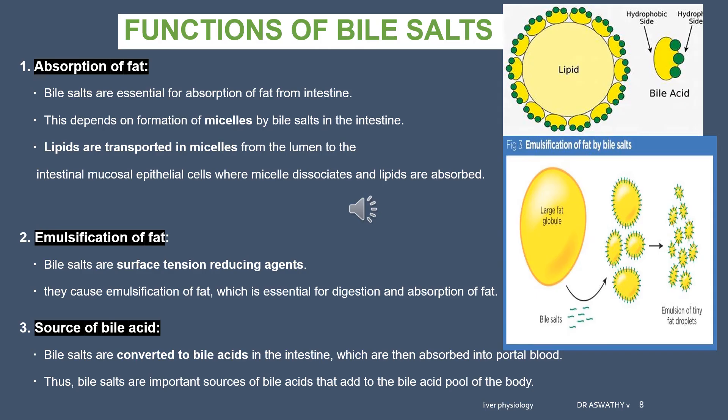Bile salts have two ends — one polar end and one fat-soluble end. Twenty to forty bile salts come and attach to monoglycerides or free fatty acids at their fat-soluble end, projecting the polar end towards the outside, forming a spherical molecule called a micelle. Through the formation of these micelles, the free fatty acids and monoglycerides are transported away from the site of lipid digestion. These micelles also help in absorption of fats into the brush border of the intestinal epithelial cells.